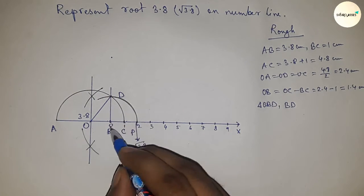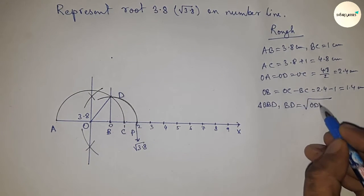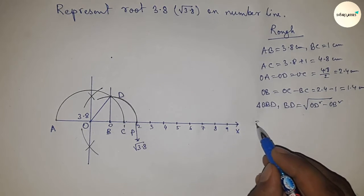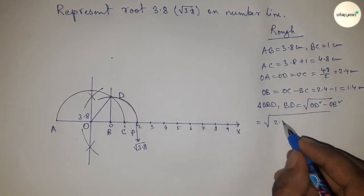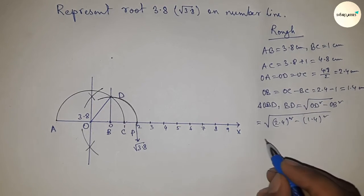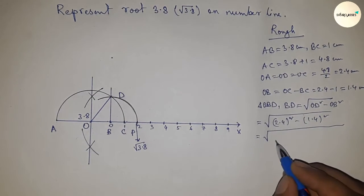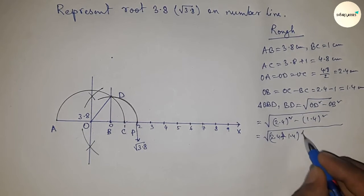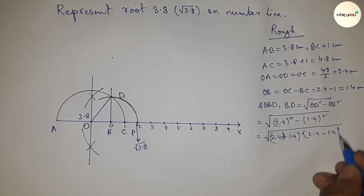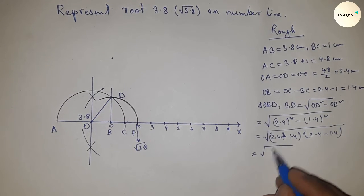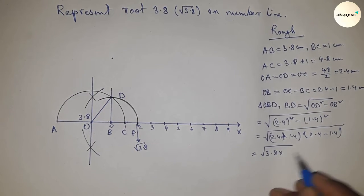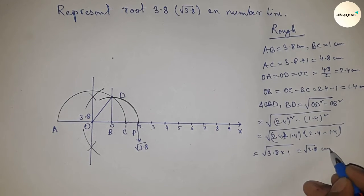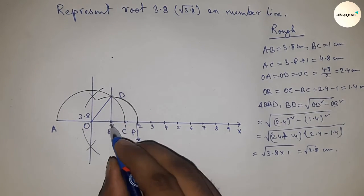Putting the values of OD and OB, and applying the formula a squared minus b squared equals (a plus b)(a minus b), we get 4, 3.8, and 1. This gives us 3.8 centimeters.